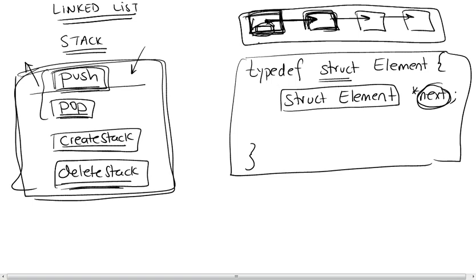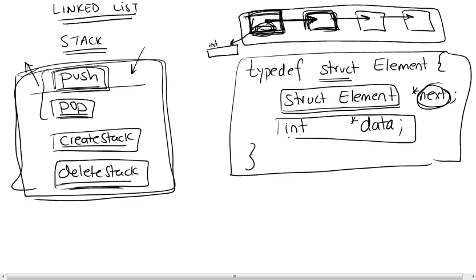Then we have the data itself. You could have data of any type. In this case, for our particular example, we're going to put our data as type int — specifically a pointer to an int. So the data will be a pointer to an integer. This is the most important part, and this is what we need to add in order to have this linked list — this collection of elements linked one to the other via pointers. This basically defines the element itself.